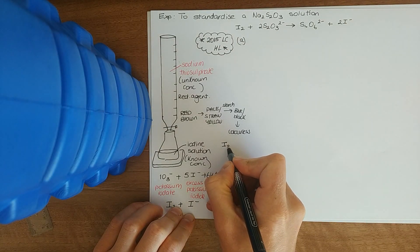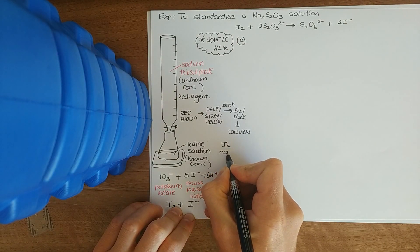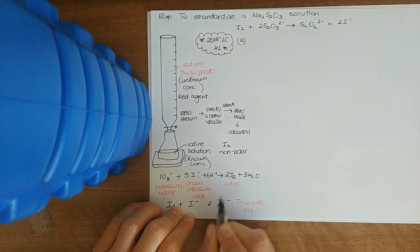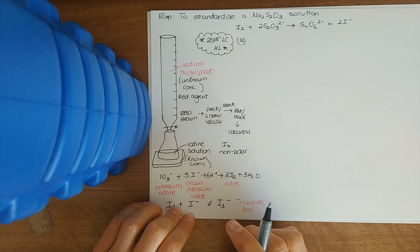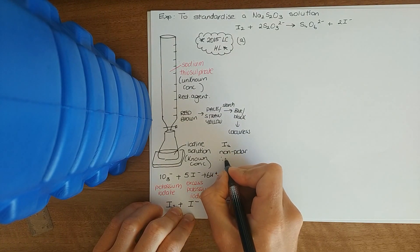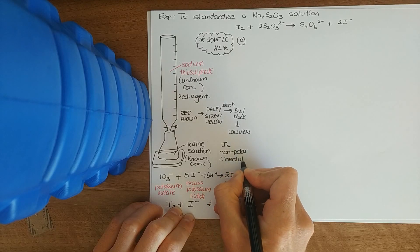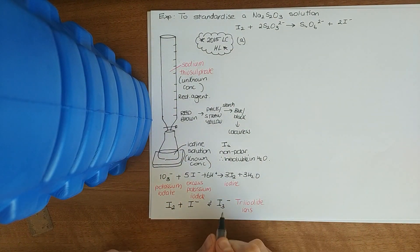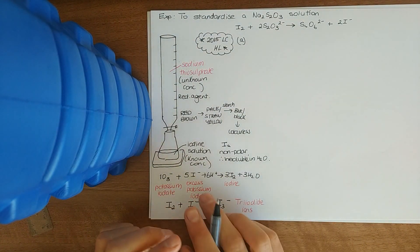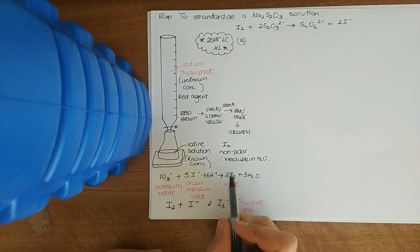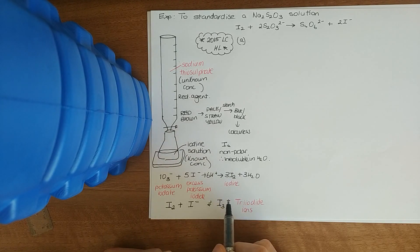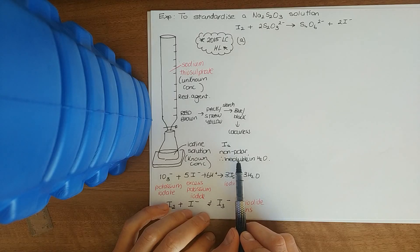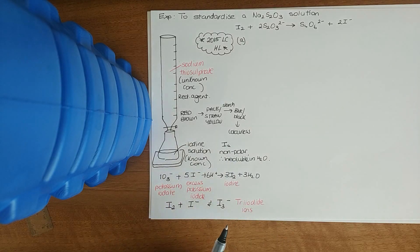The problem with iodine, which is I₂, is that it's non-polar — it has van der Waals forces, the weakest of the intermolecular forces. Because it's non-polar, it's insoluble in water. Remember, like dissolves like: polar dissolves in polar, non-polar dissolves in non-polar. One of the criteria of a primary standard is that it's a water-soluble substance, so iodine is not technically a primary standard.